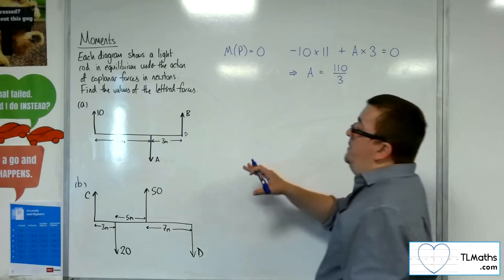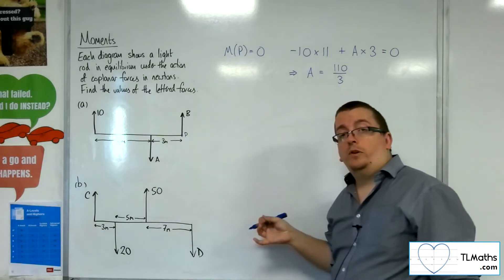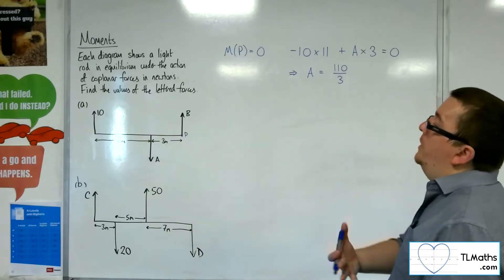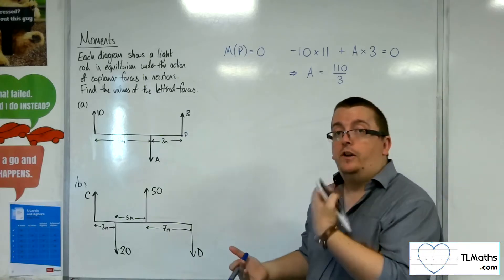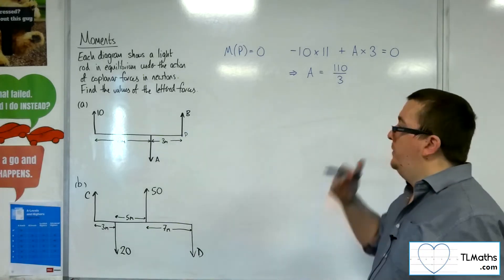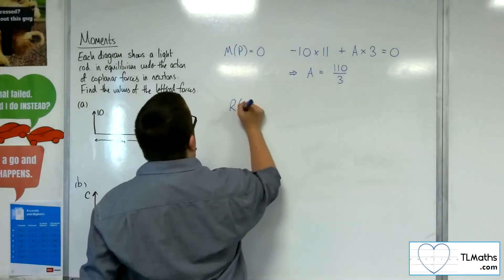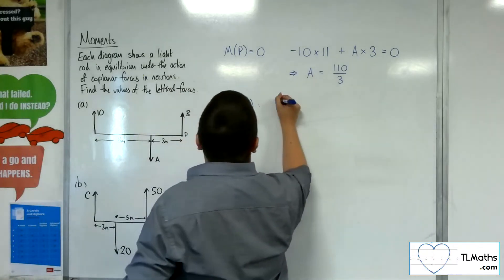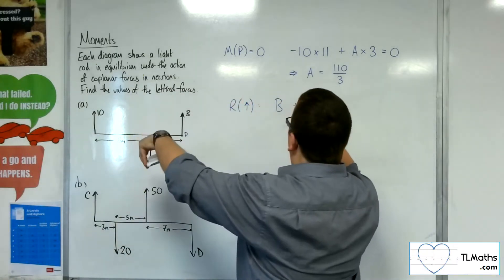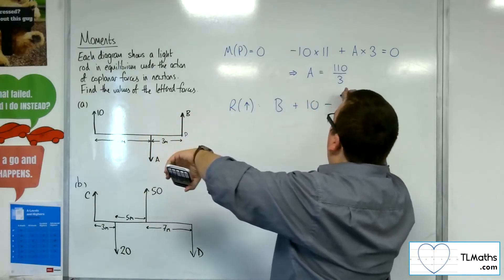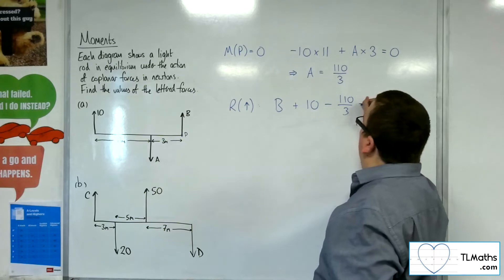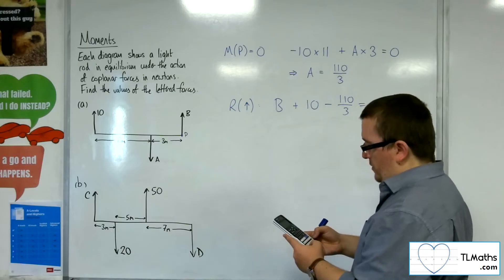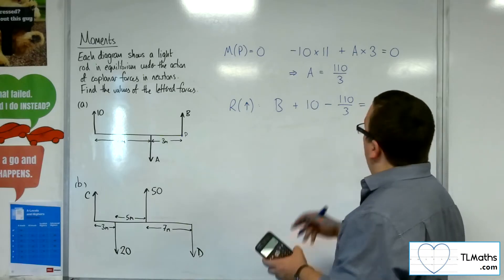From here, I could take moments about another point to find B, but since A is the only remaining unknown in the vertical direction, I can use the fact that the resultant force must be zero. Resolving vertically, taking upwards as positive: B and 10 are positive, and 110 over 3 is negative. So B equals 110 over 3 minus 10, which is 80 over 3.